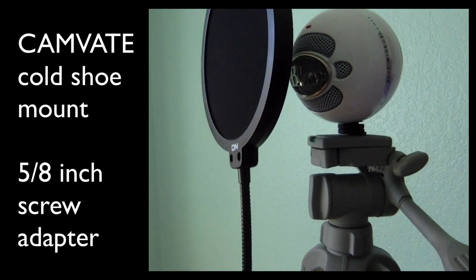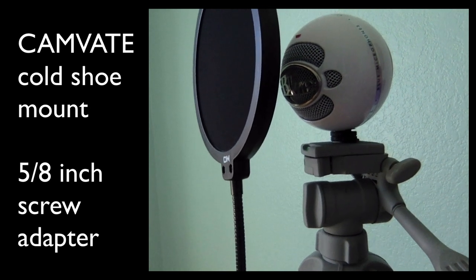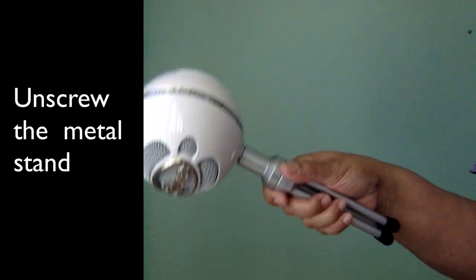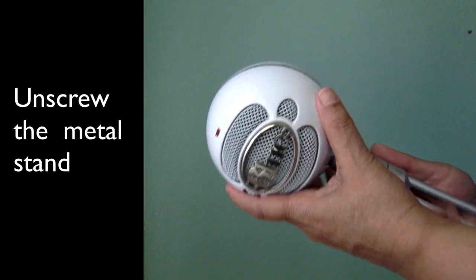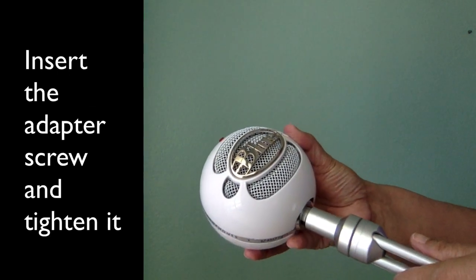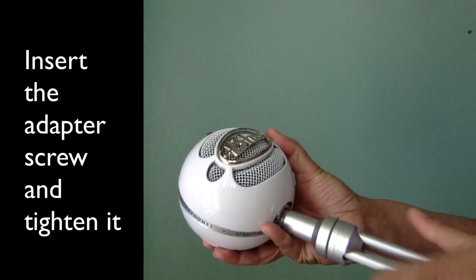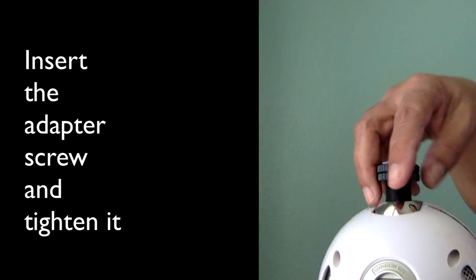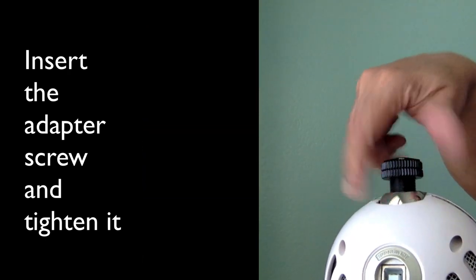This is a standard adapter that is used to mount a microphone to the top of a camera. Unscrew the original metal stand from the microphone and insert the adapter screw and tighten it.